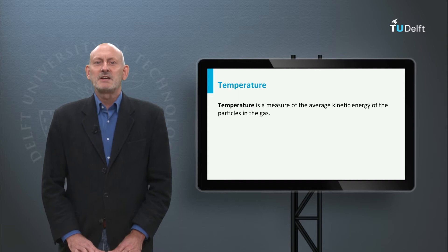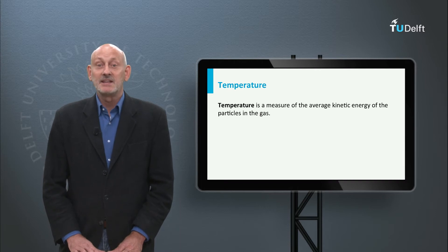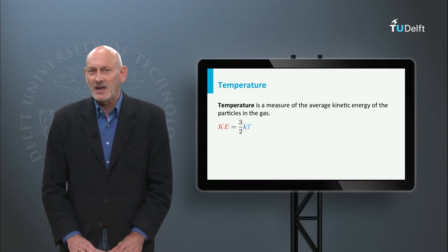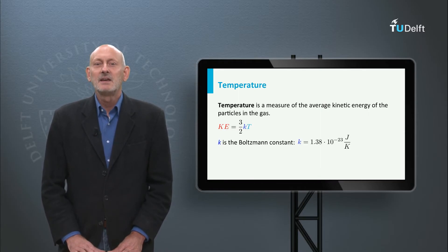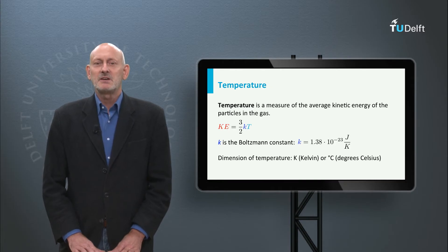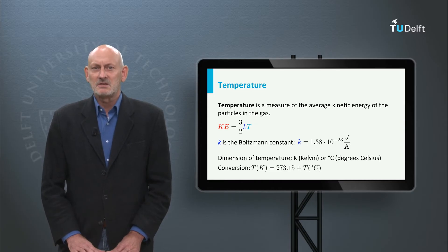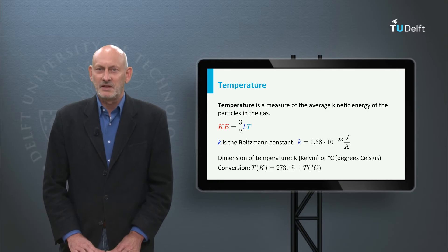The temperature is a measure of the average kinetic energy of the particles in a gas. This kinetic energy is given by 1.5 times K times the temperature T, where K is the Boltzmann constant. Temperature is expressed in Kelvin or degrees Celsius. Zero degrees Celsius is 273.15 Kelvin.